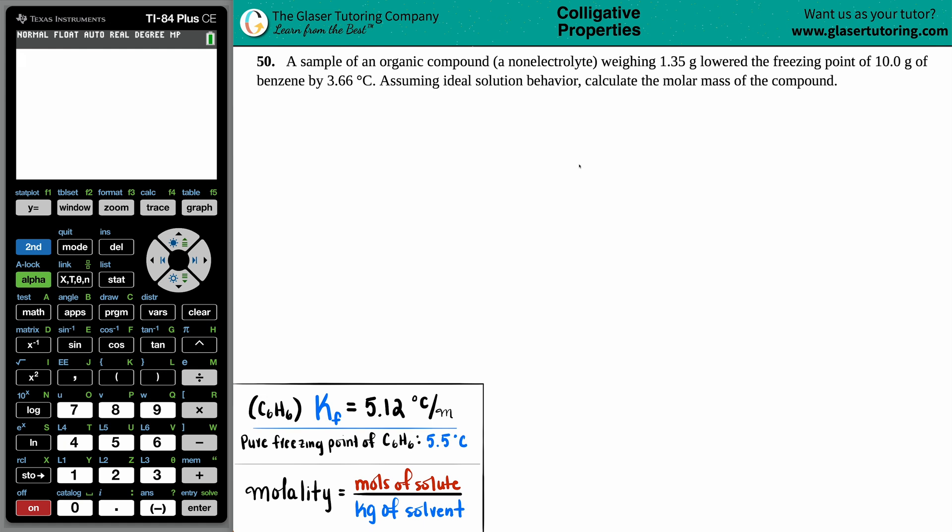Number 50. A sample of an organic compound, which is a non-electrolyte, weighs 1.23 grams and lowered the freezing point of 10.0 grams of benzene by 3.66 degrees Celsius. Assuming ideal solution behavior, calculate the molar mass of the compound.